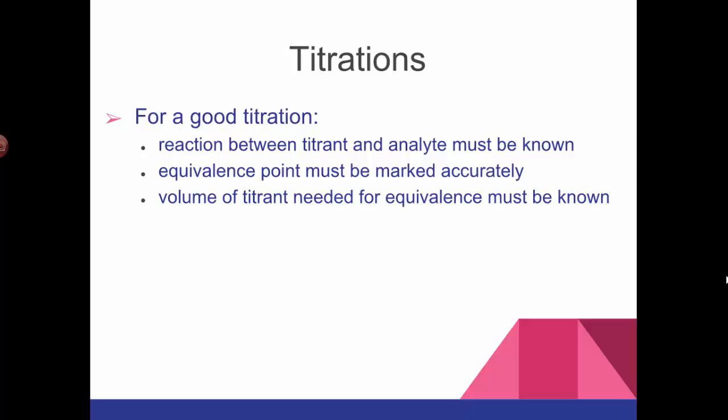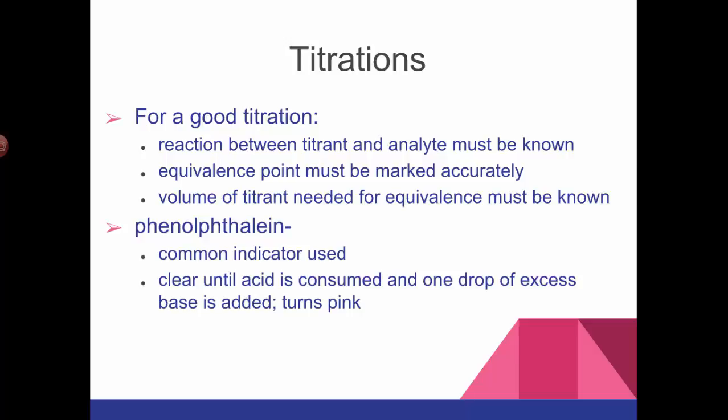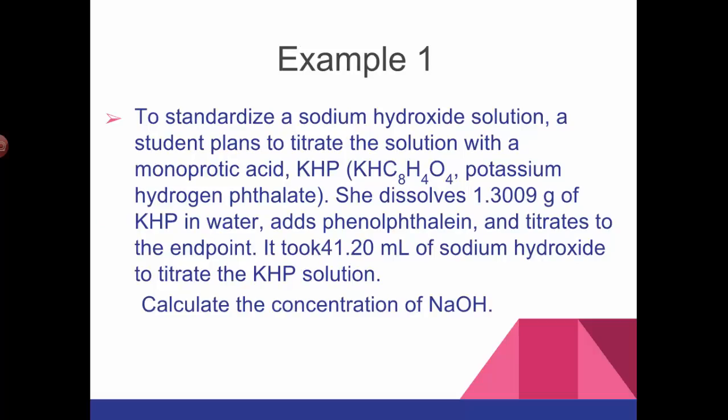A burette is like a really long skinny graduated cylinder that's much more accurate - accurate to the hundredth of a milliliter. It has a valve at the bottom, or something called a stopcock, which allows you to deliver small volumes at a time so that you can go very slowly. For most acid-base titrations we use phenolphthalein. Phenolphthalein is a common indicator - it's colorless until all of the acid is gone, and then the instant your pH rises into the base range, it turns pink.